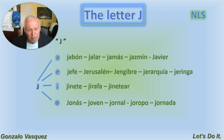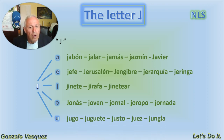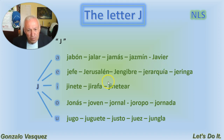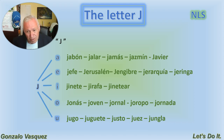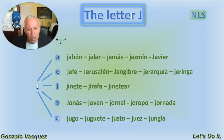La letra J con la U — the sound is 'ju.' Jugo is juice. Juguete is a toy. Justo means fair or just, and it's also a well-known proper male name. Juez is a judge — a youth in a court. Jungla — in English 'jungle,' in Spanish 'jungla,' same thing. So: jugo, juguete, justo, juez, jungla.